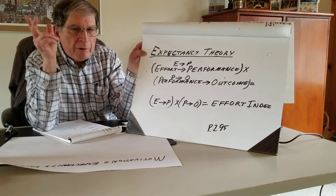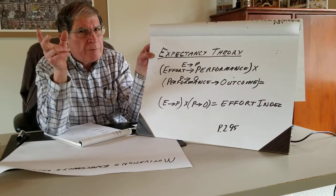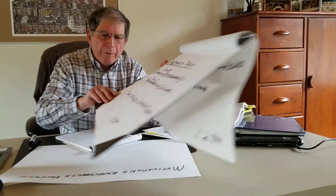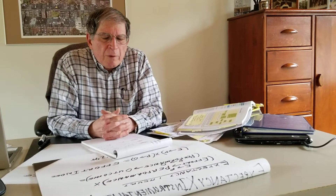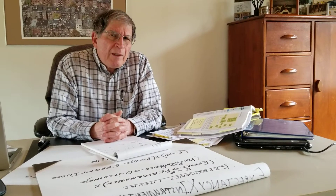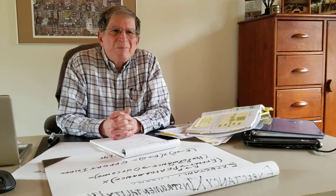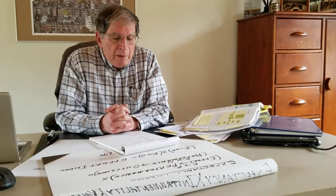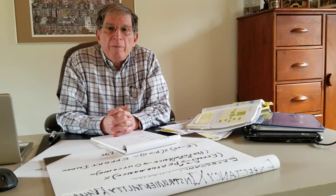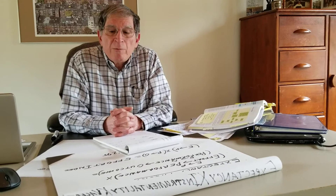I've got three people: Peter, Paul, and Mary. Who should I give a particular task to? Peter believes that 90% of the time his effort leads to performance, but only 50% of the time does that performance lead to an outcome. Paul believes his effort leads to performance only 30% of the time, but does believe that performance leads to an outcome. Mary believes that 90% of the time her effort leads to good performance, and 90% of the time that performance leads to some sort of outcome.